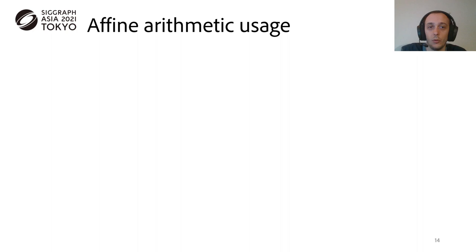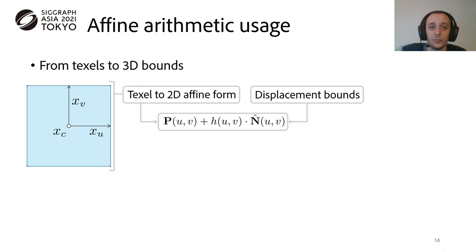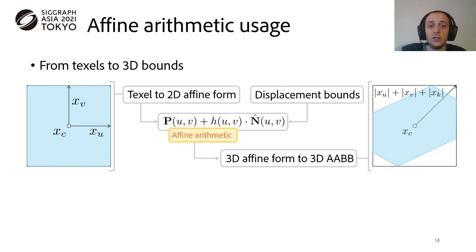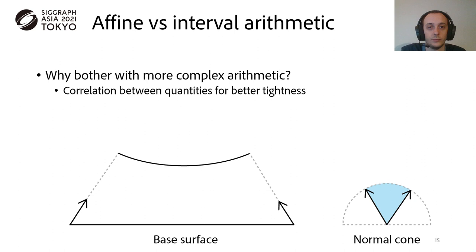Going back to our texels, we can directly convert a texel as a 2D affine form, using the texel center and its two half-axis. With the displacement bounds obtained from the min-max mipmap, we can now plug them both into the displacement formula, but using affine arithmetic. This gives us a 3D affine form that can be easily converted to an axis-aligned bounding box. Affine arithmetic is compatible with all the arithmetic operators needed for the displaced surface, so addition, multiplication, dot product, and inverse square root.